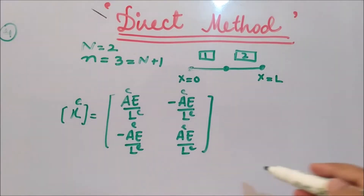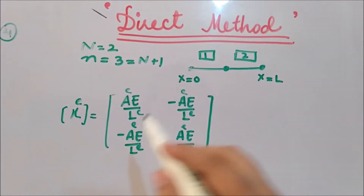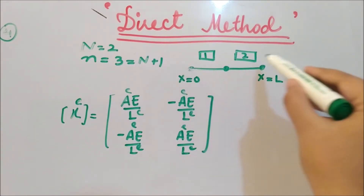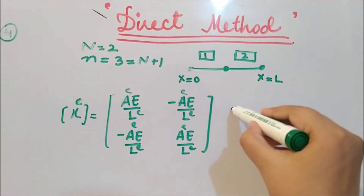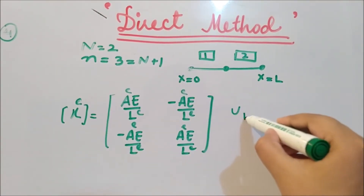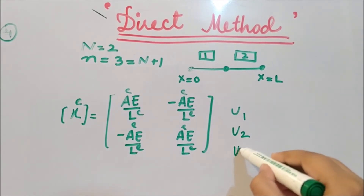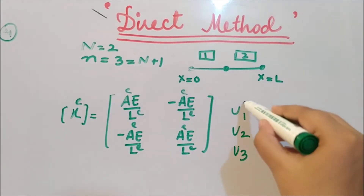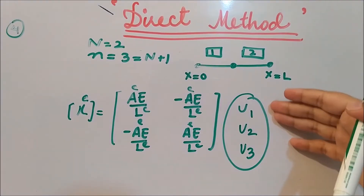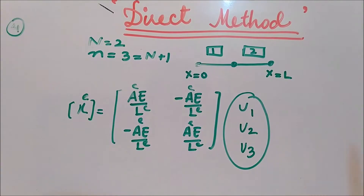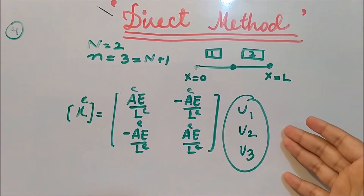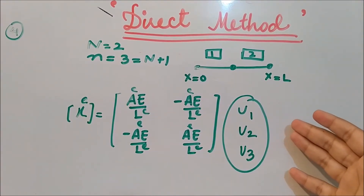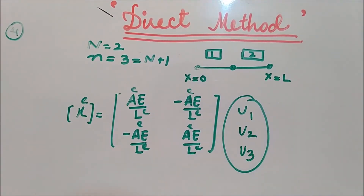Since we have three nodes, we have three nodal displacements, which are the elements of the nodal displacement vector. Let's write the matrix for the whole geometry.